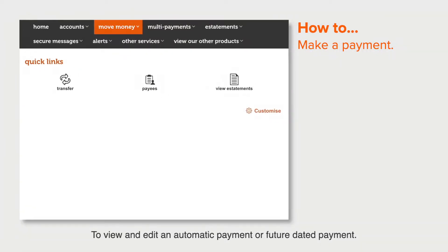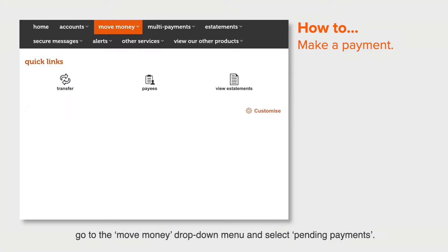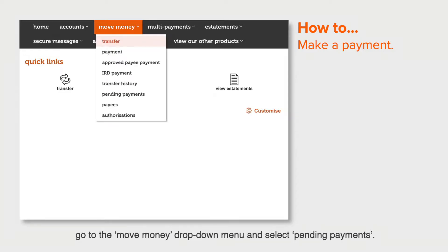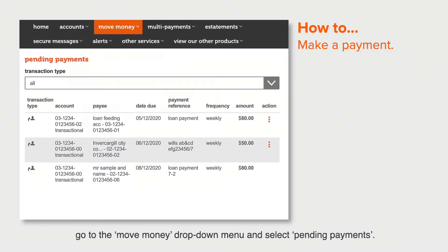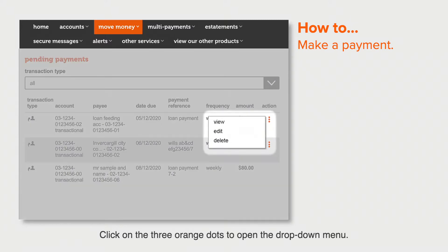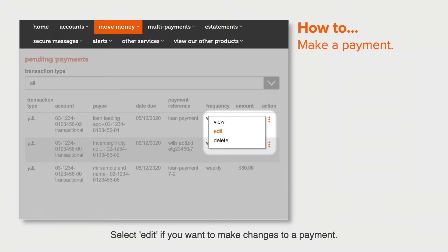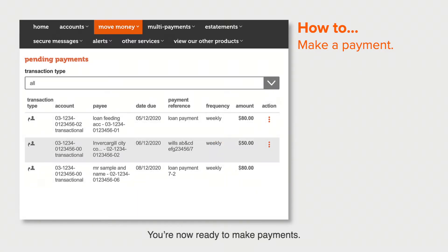To view and edit an automatic payment or future dated payment: go to the move money drop down menu and select Pending Payments. Click on the three orange dots to open the drop down menu. Select View if you want to view the details of your payment, select Edit if you want to make changes, or select Delete to stop the payment. You are now ready to make payments.